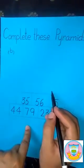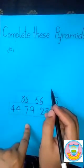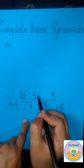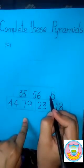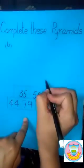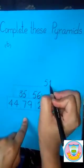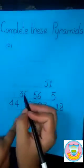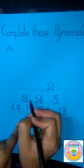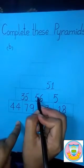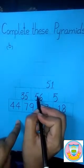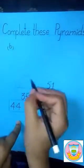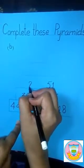Now we solve the 2nd row of this pyramid. We subtract 56 by 5. When we subtract 56 by 5, we get the answer of 51. We write the answer in this box. Now we subtract 56 by 35. When we subtract 56 by 35, we get the answer of 21.